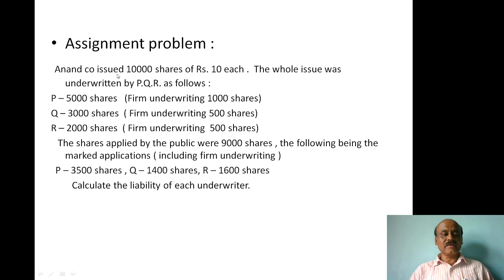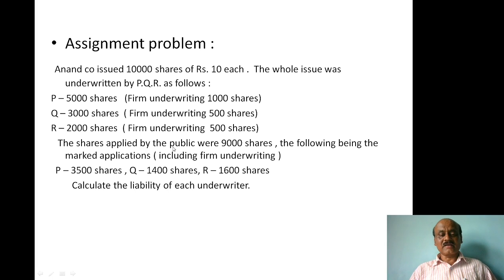Another type of problem: Anand Company issued 10,000 shares of Rs.10 each. The whole issue was underwritten by P, Q, R as follows: P — 5,000 shares, firm underwriting 1,000 shares; Q — 3,000 shares, firm underwriting 500 shares; R — 2,000 shares, firm underwriting 500 shares. The shares applied by the public were 9,000. The marked applications including firm underwriting: P = 3,500 shares, Q = 1,400 shares, R = 1,600 shares. Calculate the liability of each underwriter.